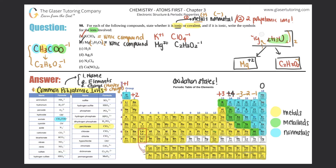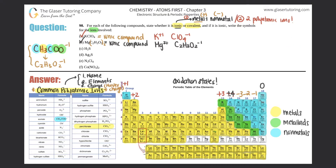Part C: H₂S. Hydrogen is a non-metal and sulfur is a non-metal — two non-metals means no metal is present, so H₂S is a covalent compound. For covalent compounds we don't write ions because there are no ions — they share electrons.